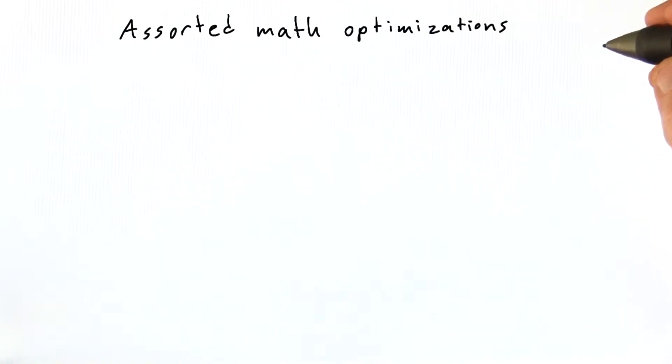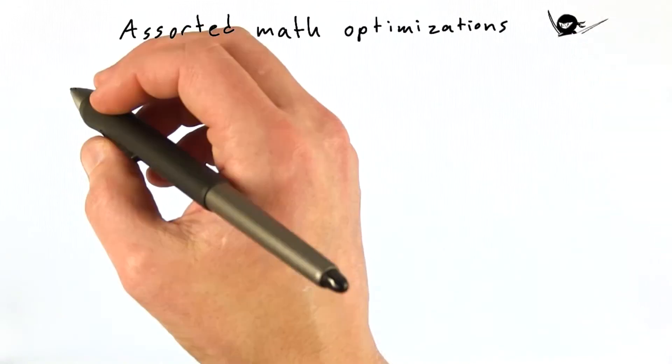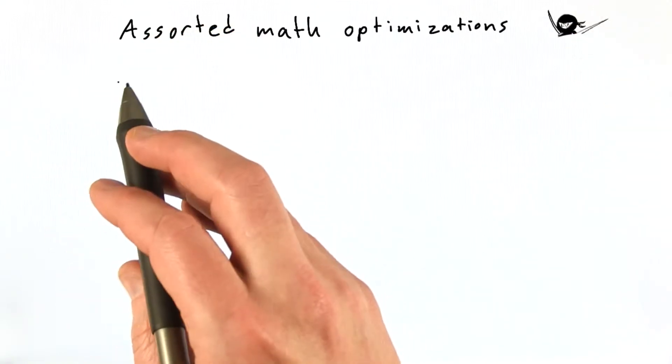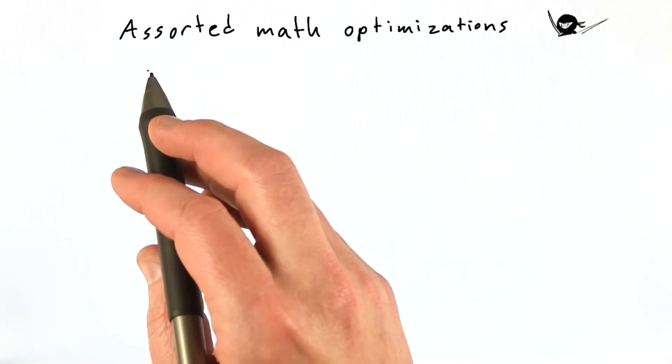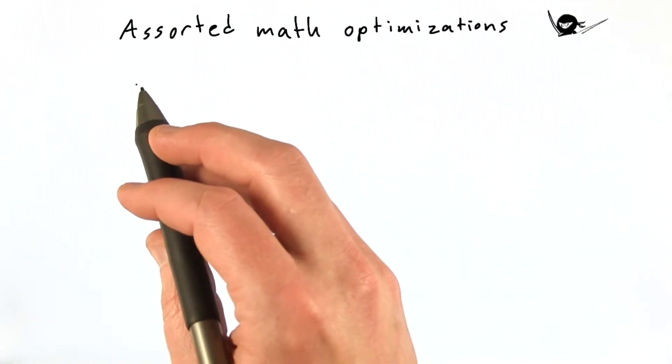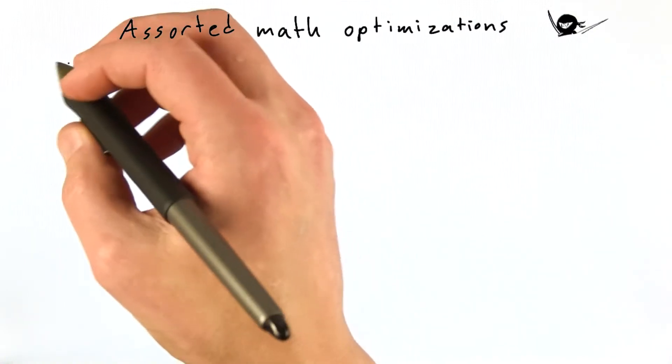It's also worth noting that different math instructions take different amounts of time. And this topic gets maybe half a ninja. You can go really deep understanding the latencies involved in different math optimizations, but there's a few general principles that probably everybody should keep in mind.